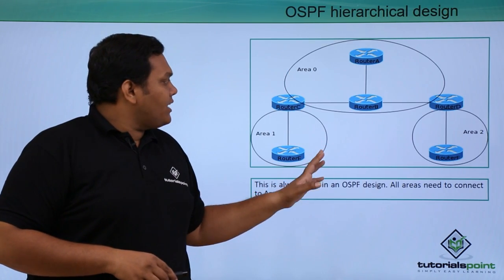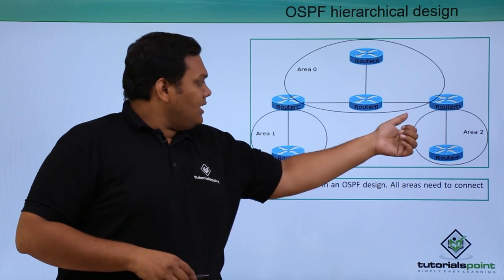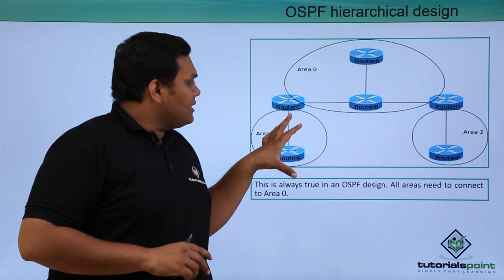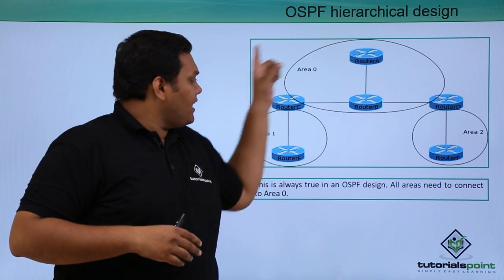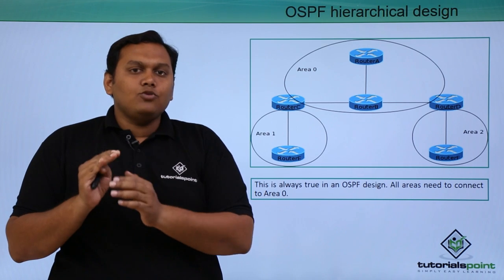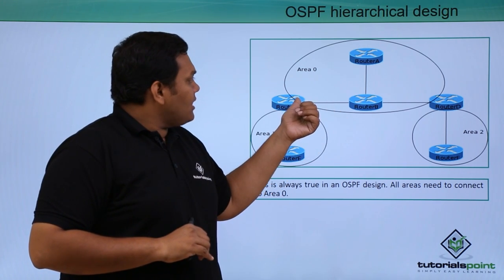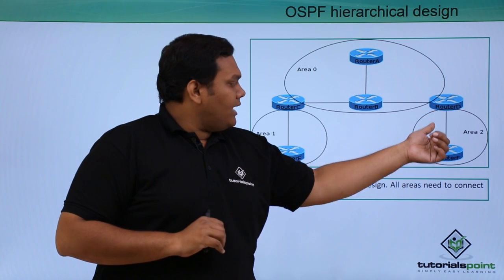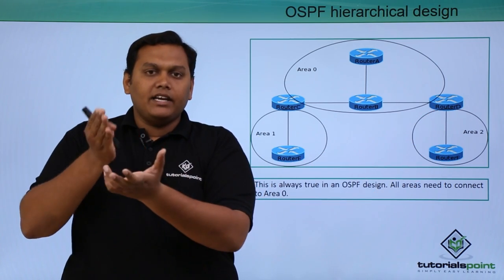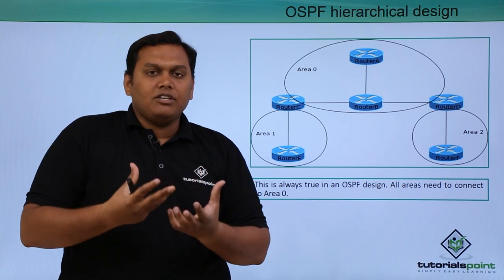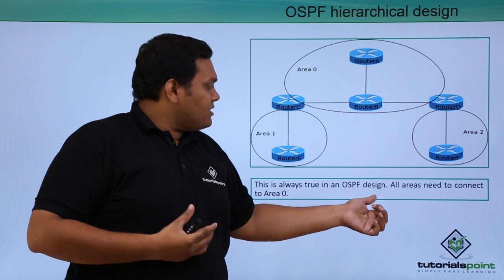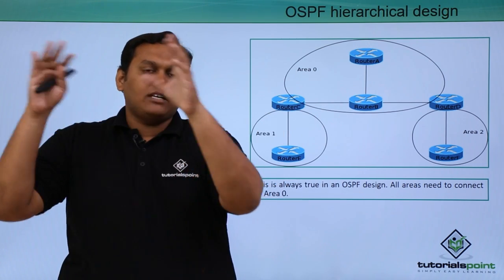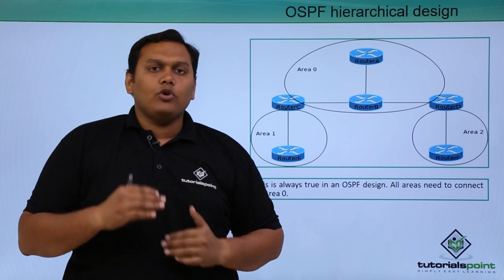Looking at a basic OSPF design, routers A, B, C, D, E, and F are configured with OSPF. The inter-network is divided into smaller areas for easier maintenance. Area 0 contains routers A, B, C, D, and F; Area 1 contains routers C and E; and Area 2 contains routers D and F. This division into three areas improves troubleshooting and performance. In OSPF design, all areas must connect to Area 0.